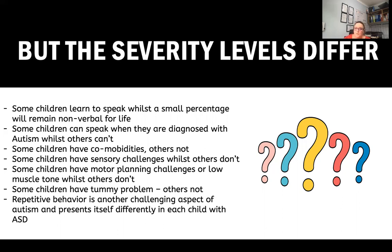We can look at a couple of other things that differ, like comorbidities. Some children have comorbidities, others don't. Some individuals really struggle with sensory challenges, or what they refer to as sensory integration disorder, while others aren't as sensory sensitive. The same goes with motor planning challenges — the perception of danger, bumping into things. Some children really battle with where they fit in space and spatial geometry, while others don't.